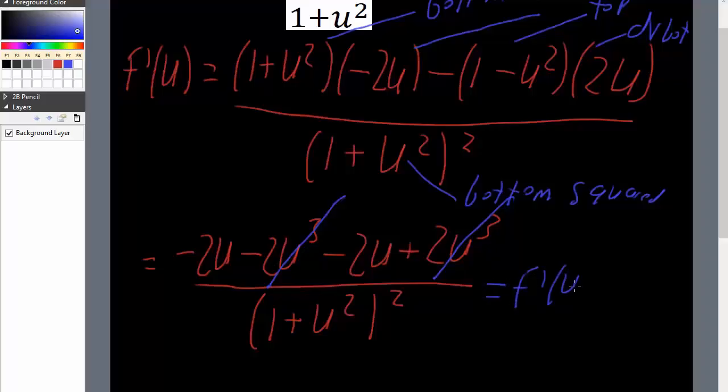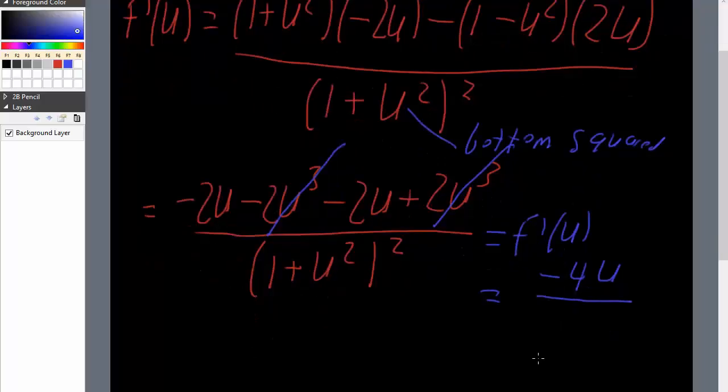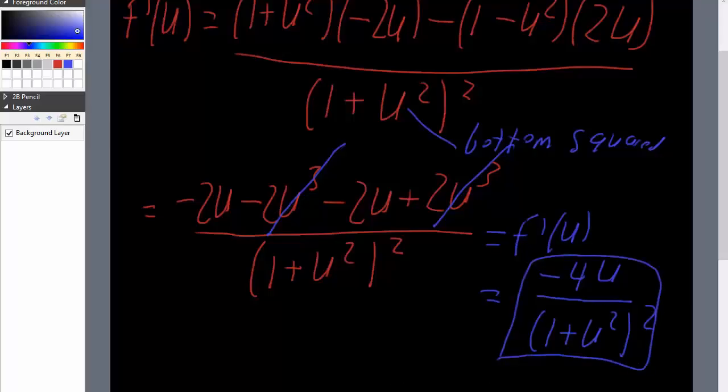Will equal negative 4u divided by parenthesis 1 plus u squared, and square the whole thing. And this will be our final answer. And that's it.